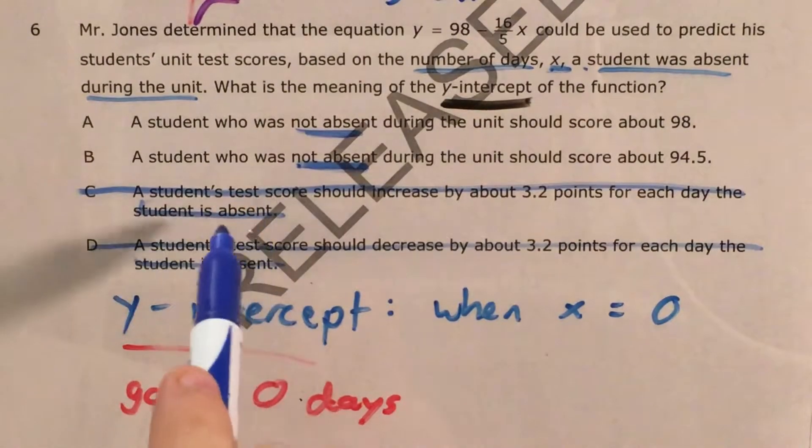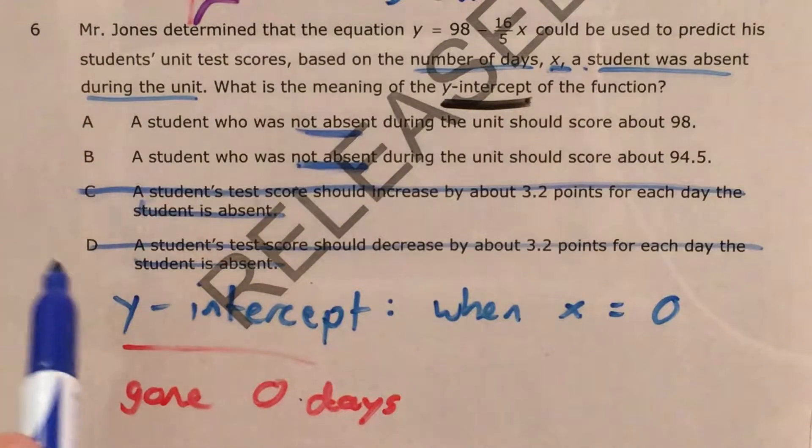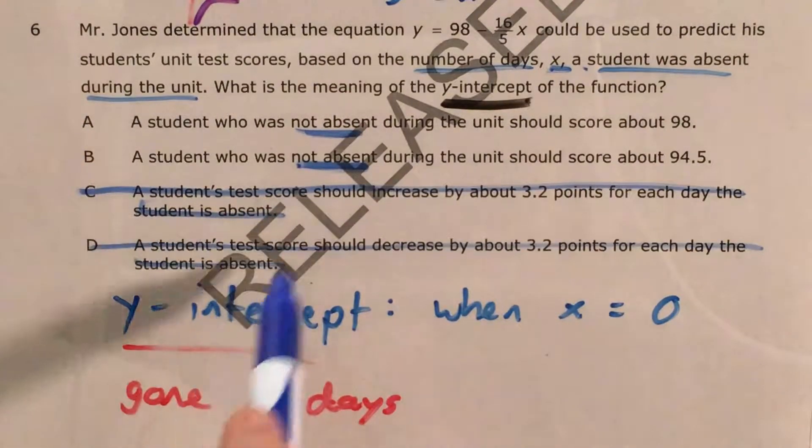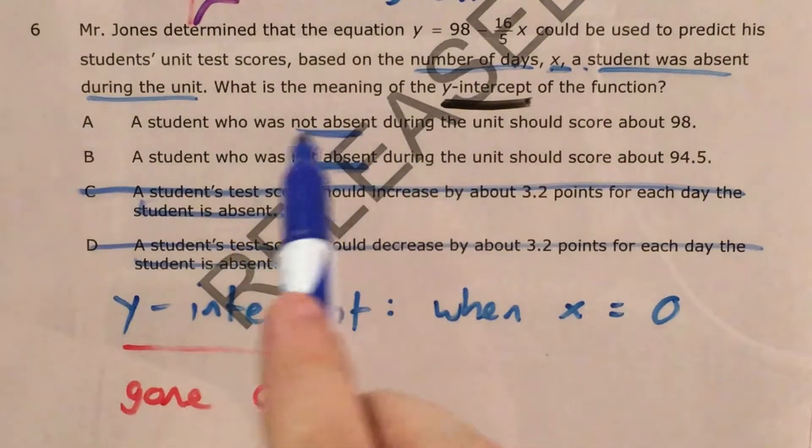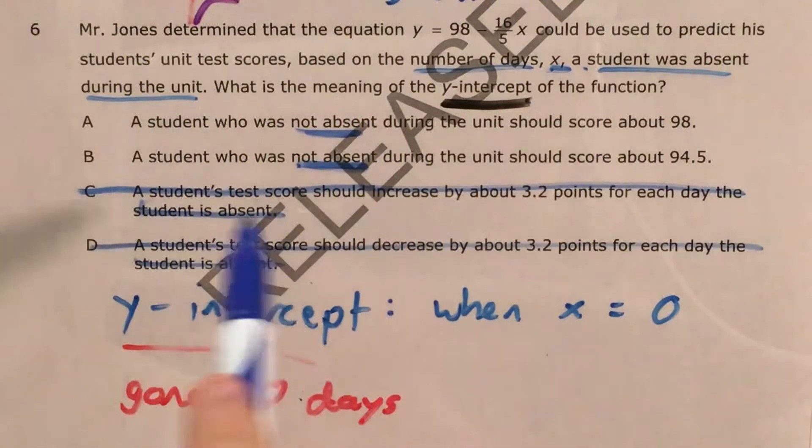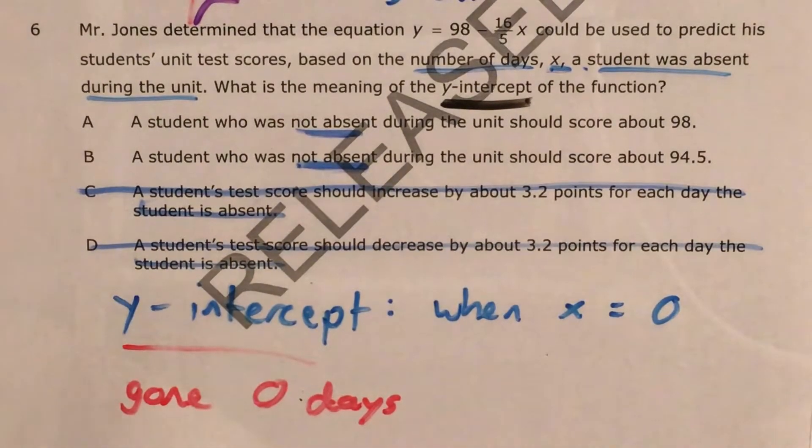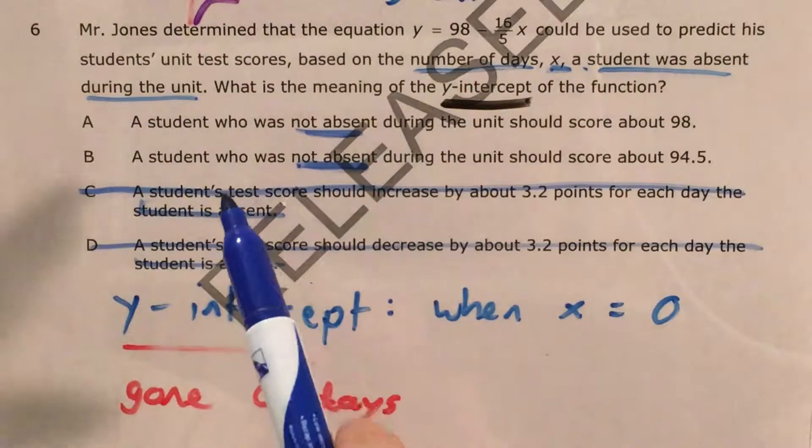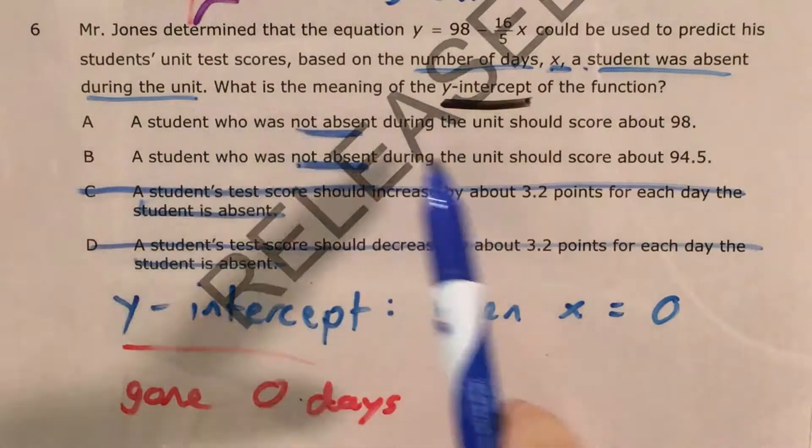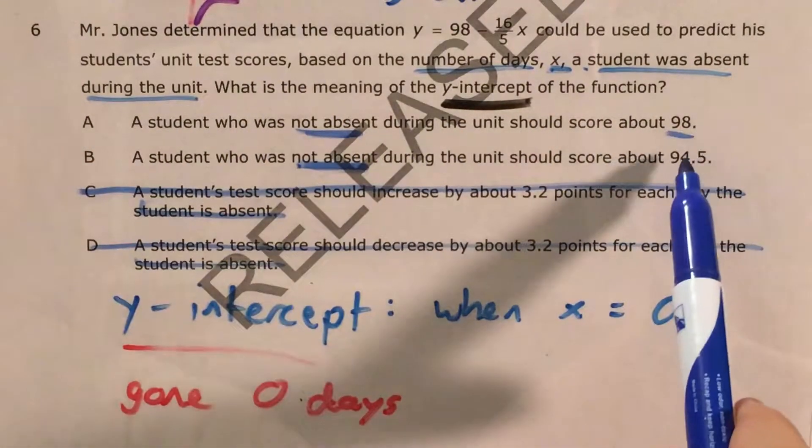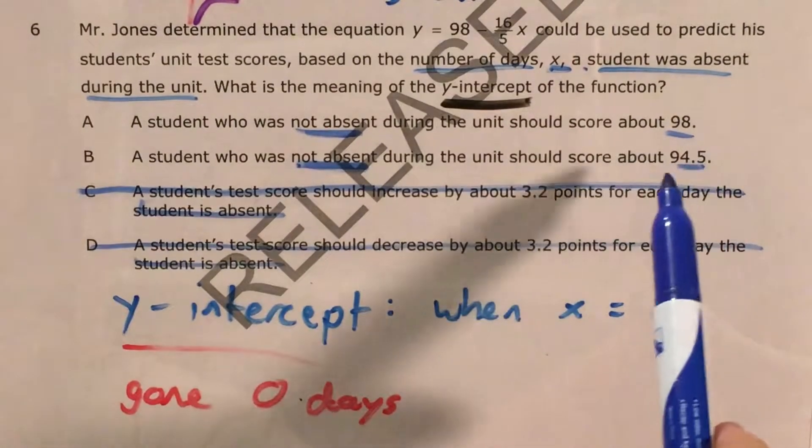and if I saw some of these answer choices, I might start to overthink this and go, well that kind of talks about gone 0 days because what if they were gone 0 days or one day or blah blah blah. But thankfully we don't have to do that. We just have to look at choice A and choice B. They have the same wording, the only difference is this number at the end.